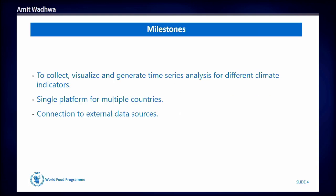Based on those challenges and opportunities, we identified three main milestones. The first is to collect, visualize, and generate time series analysis for different climate indicators — drought, vegetation, and rainfall. The second is the need for a single platform that works for multiple countries, since much of the data is country- and context-dependent. For example, in the Caribbean the most requested data is tropical cyclones and rainfall, while in other countries drought is the main indicator. The third is connection to external data sources like USGS, GDAX, and armed conflict information.